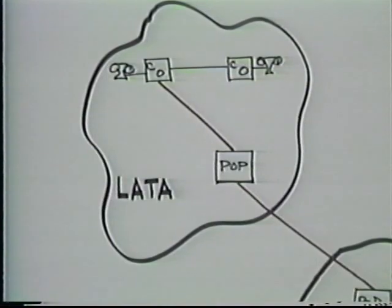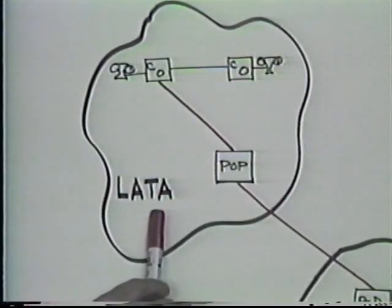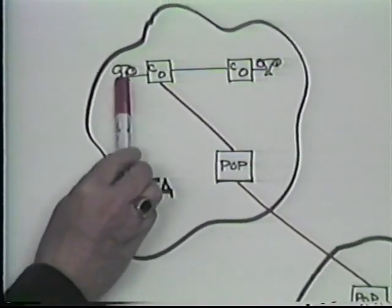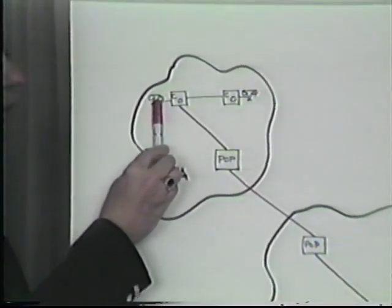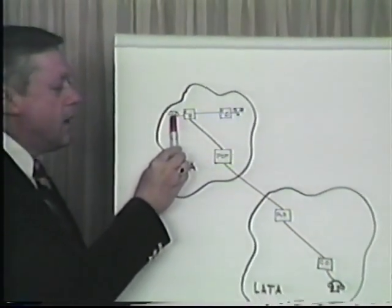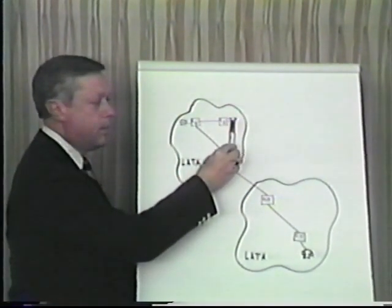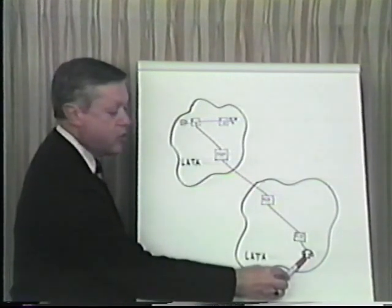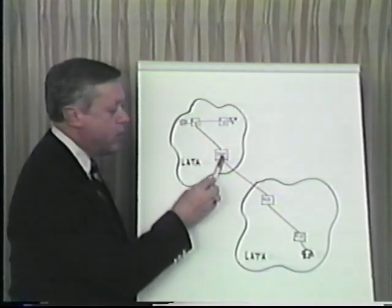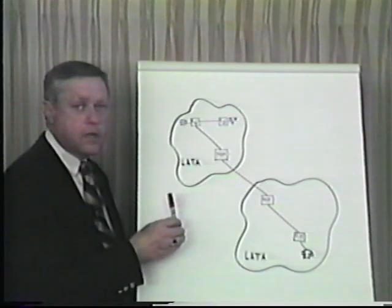When the telephone companies in the United States were deregulated, the Federal Communications Commission divided them up into geographic zones called LATAs, or local access transport areas. Within the LATA, the local telephone company provides all the services. You get your single phone line from the phone company, and if you place a call from someone within the LATA to another person within that same LATA, it's carried by the local telephone company. If you want to call someone in another LATA across the country, that call is handled through a common carrier such as AT&T, MCI, or Sprint.